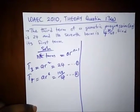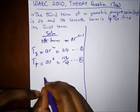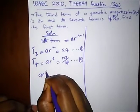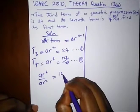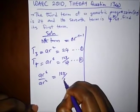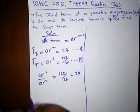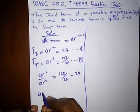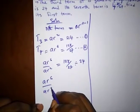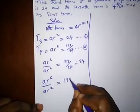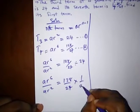So here, all we just need to do is divide this equation by this equation. So we have ar⁶ divided by ar² equal to 128/27. So let me make this proper. We have ar⁶ = 128/27 times 1/24.